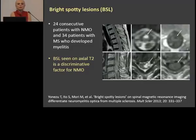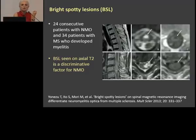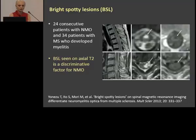As more cases accumulated and a positive test became available, correlations with multiple sclerosis could be made. Something called bright spotty lesions was found — published just two years ago. Looking at axial T2 images, the lesions in neuromyelitis optica are much brighter than lesions in multiple sclerosis. They are very white, really glowing. These are the bright spotty lesions, and if you see them on axial T2 it is a very important discriminative factor for NMO.